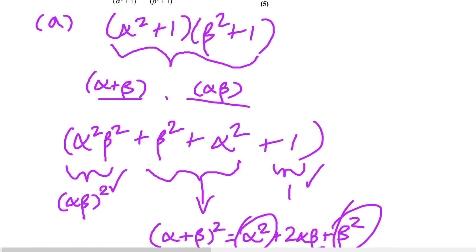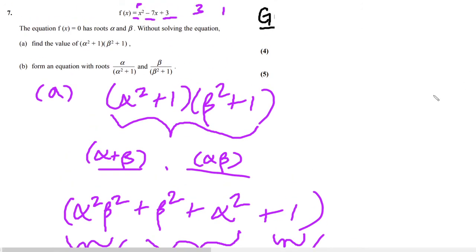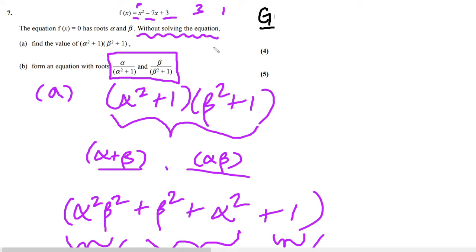So the answer to Part A is 53. Now we move on to Part B, where we need to form an equation with roots α/(α² + 1) and β/(β² + 1). You are not allowed to solve the equation — this instruction is at the top of the question and applies throughout the entire problem-solving process.